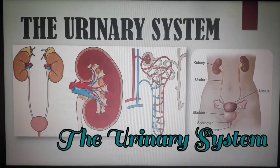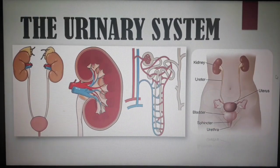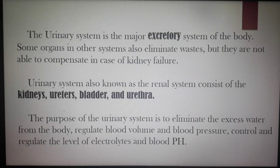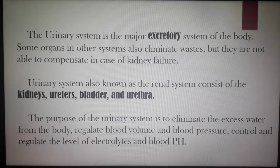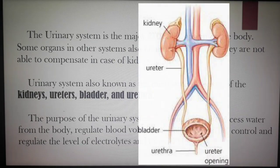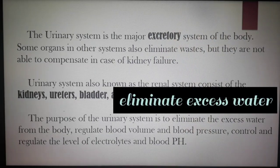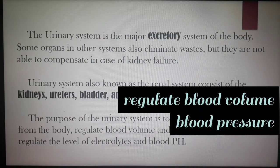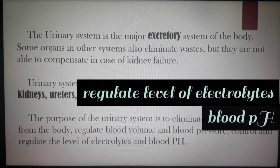The urinary system is the major excretory system of our body. Some organs in other systems also eliminate wastes, but they are not able to compensate in case of kidney failure. The urinary system, also known as the renal system, consists of the kidneys, ureters, bladder, and urethra. The purpose of the urinary system is to eliminate excess water from the body, regulate blood volume and blood pressure, and control the level of electrolytes and blood pH.